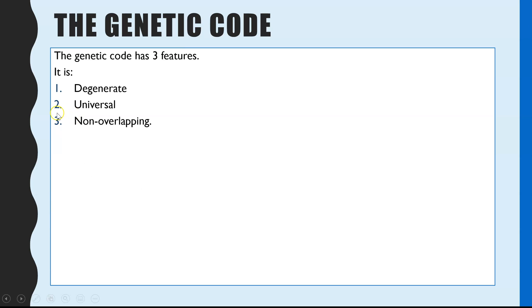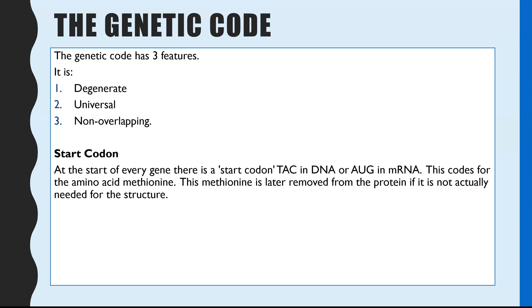The three key features are that the genetic code is degenerate, universal, and non-overlapping. We're going to go through each of those three terms individually.